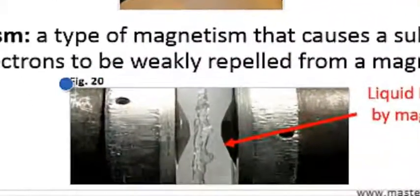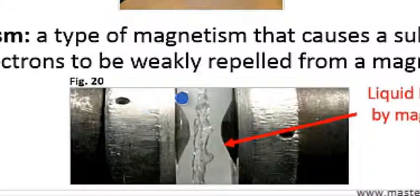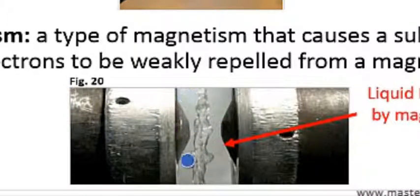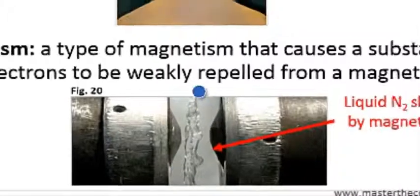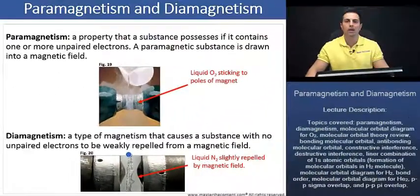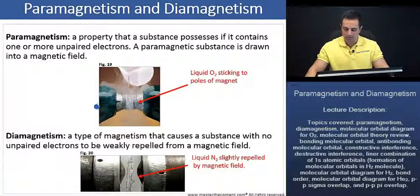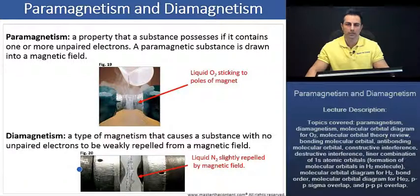Looking here at figure 20, if we take liquid nitrogen and we pour it, it's going to be slightly repelled by a magnetic field. So why is it that oxygen is going to be sticking, whereas liquid nitrogen is going to be repelled by a magnetic field?